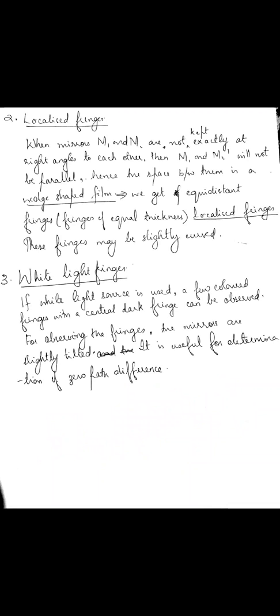When white light is used, a few colored fringes with a central dark fringe are obtained. For observing these fringes, the mirrors are slightly tilted, and this is used for the determination of zero path difference. These are the different types of fringes that you obtain using Michelson's interferometer. Please go through the notes, this video, and the YouTube video I have uploaded to get a complete picture of the different types of fringes observable in Michelson's interferometer. Thank you.